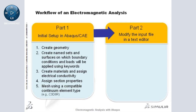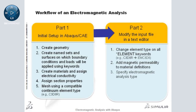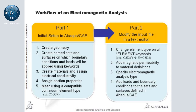For a three-dimensional problem, the default C3D8R element type is fine. At this point, you can create a job for the model and write out the input file. Then, in a text editor, you will change the continuum element type to an electromagnetic element type, then add magnetic permeability to the material definitions, specify the electromagnetic analysis type, and add loads and boundary conditions to the surfaces defined in Abaqus CAE.